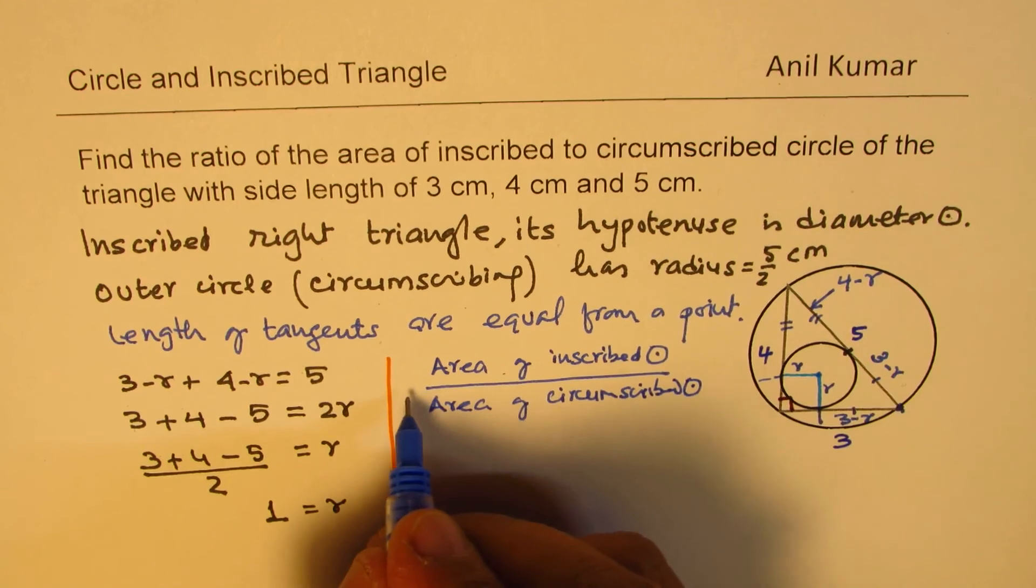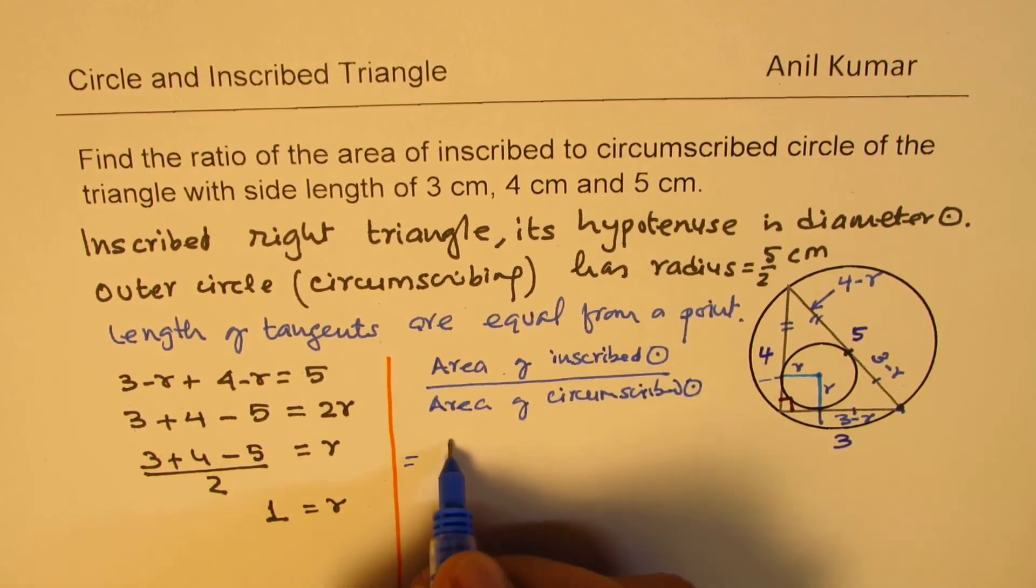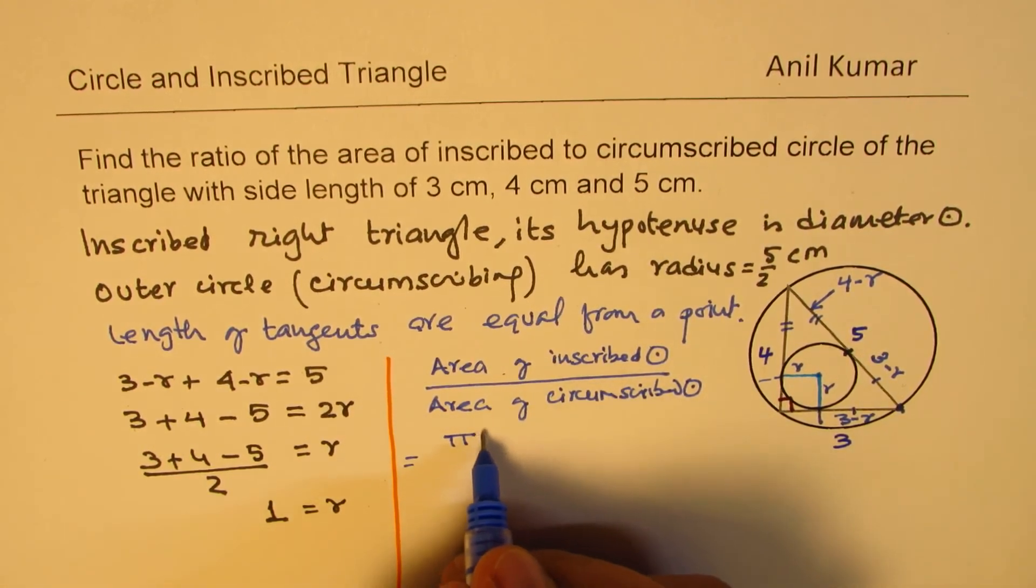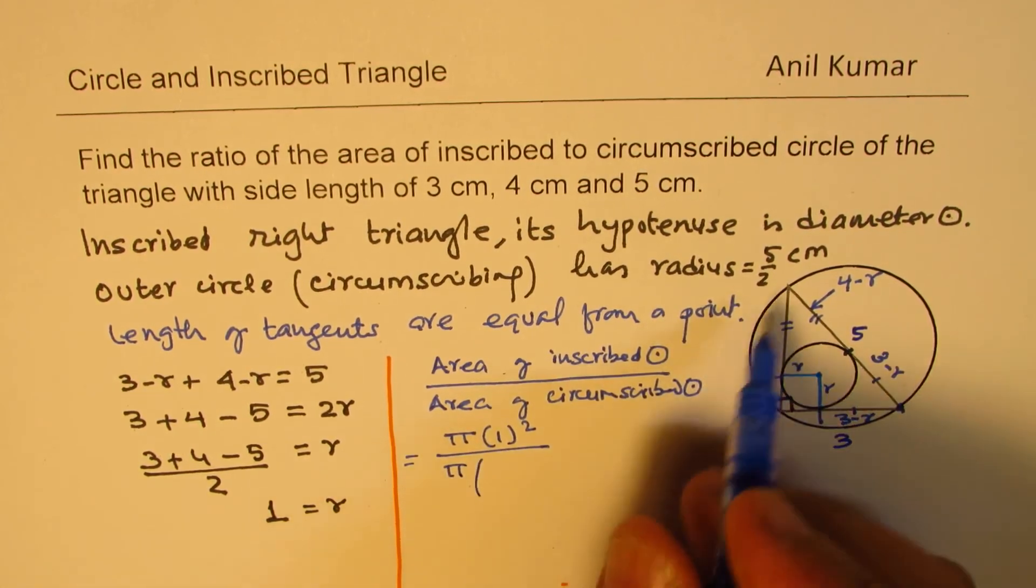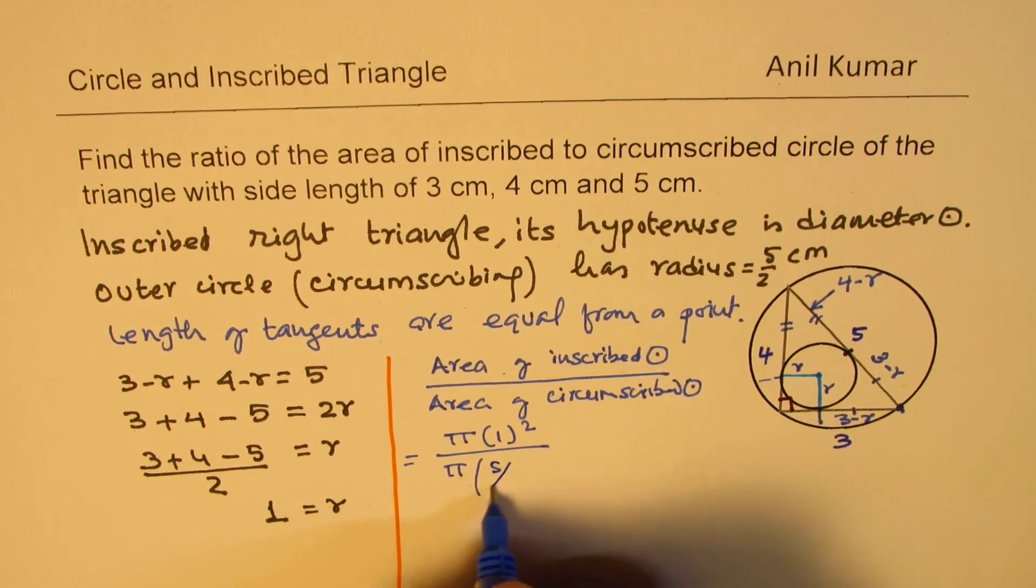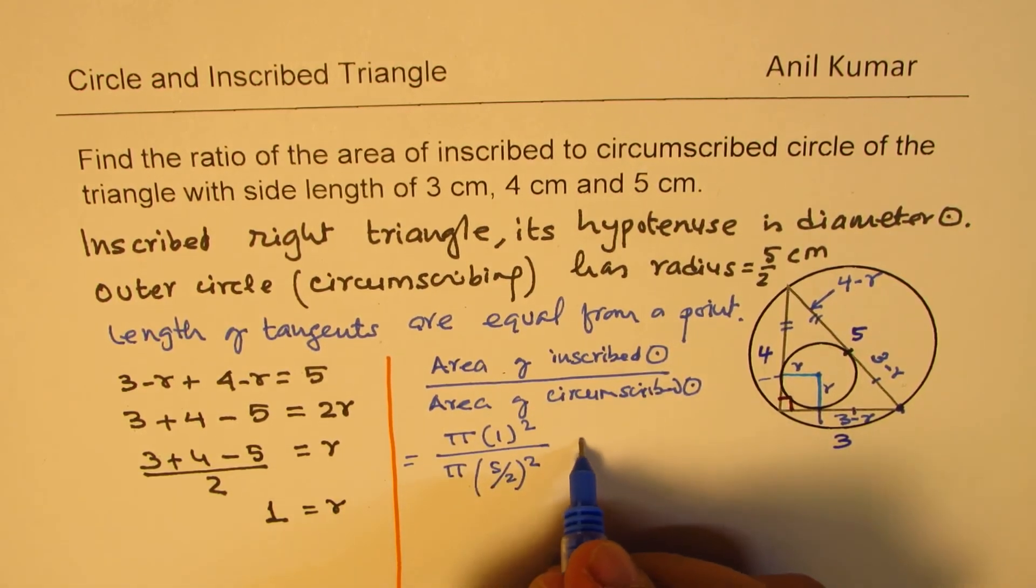So this ratio has to be pi r squared, which is 1 squared in this case. And the other case will be pi times 5 by 2 squared. So pi and pi cancel.